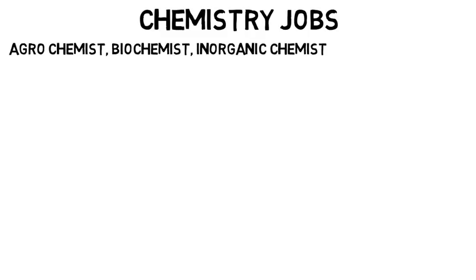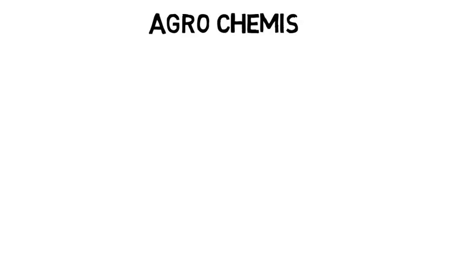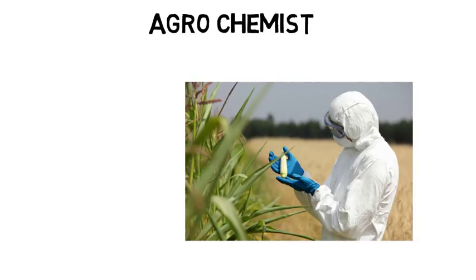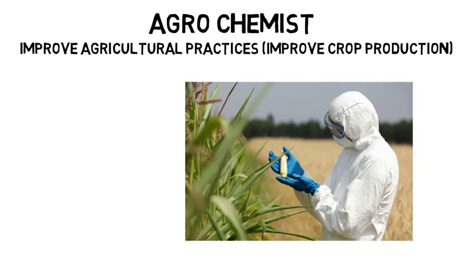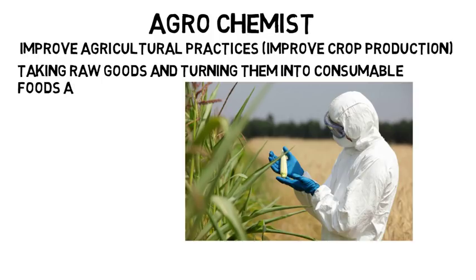Now some specific chemistry jobs would include being an agrochemist, biochemist, inorganic chemist, and many more. For example, an agrochemist would combine their chemistry and biochemistry knowledge to improve agricultural practices like improved crop production or making the process of taking raw goods and turning them into consumable foods and beverages.